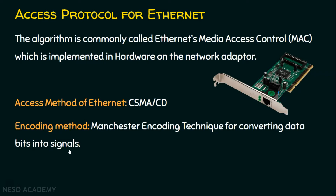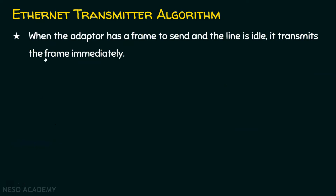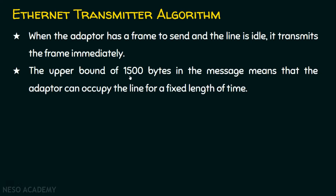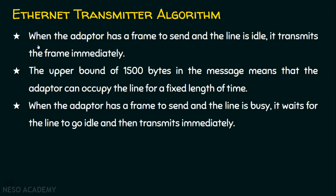Let's now dive into the Ethernet transmitter algorithm. When the adapter has a frame to send and the channel or line is idle, it transmits the frame immediately. The maximum size of the payload in an Ethernet frame is 1500 bytes, which means the adapter can occupy the line for a fixed length of time.